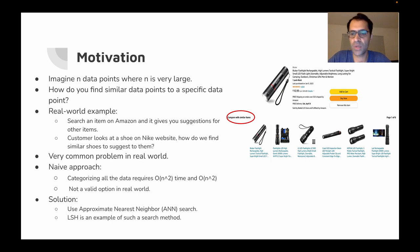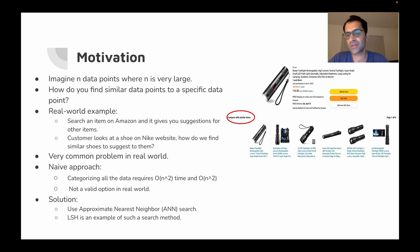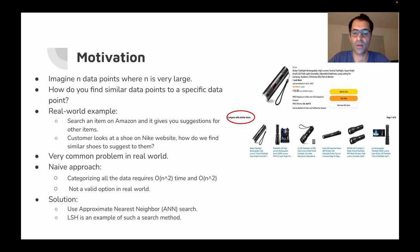The naive solution to this problem is to compare every pair of items and pick the most similar ones. This approach requires a quadratic amount of time or quadratic amount of space, which doesn't really work in the real world in cases when the number of items is very large.